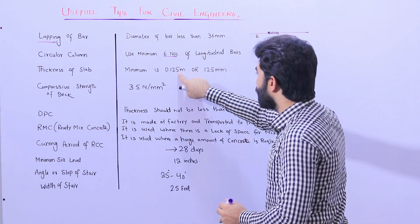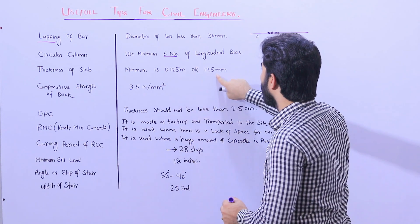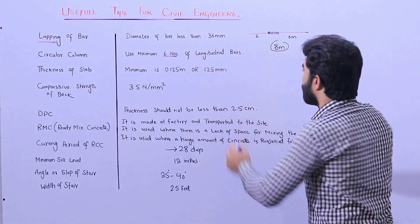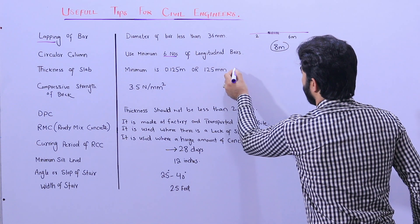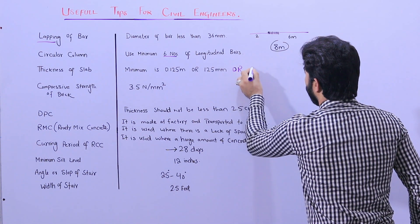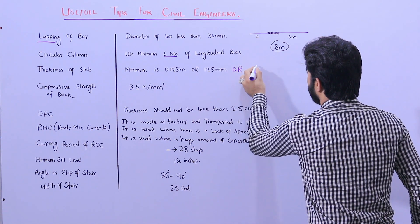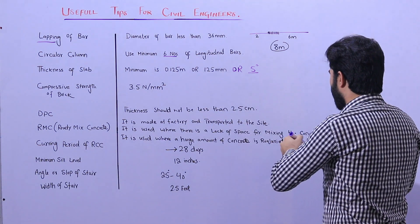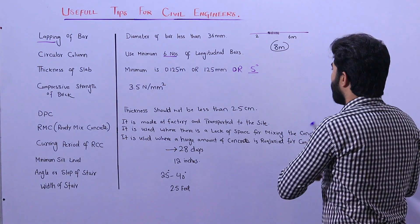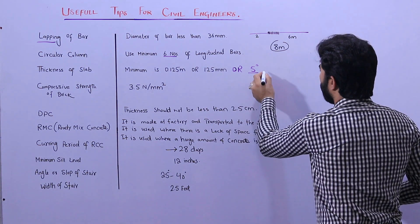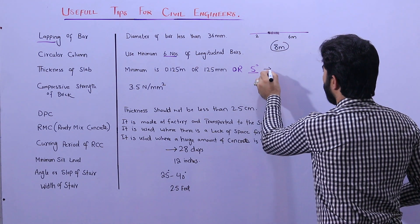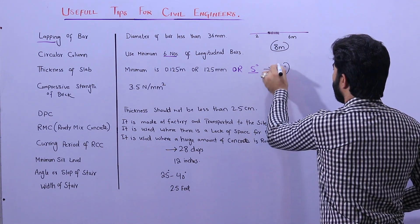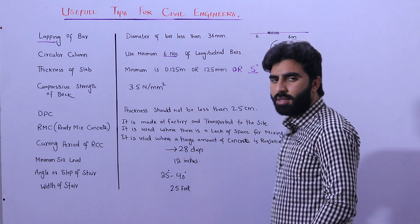The next tip is thickness of slab. The minimum thickness of slab is 0.125 meters, or 125 millimeters, which is equal to five inches. It depends on the structural load, but I recommend normally using six inches thickness of slab.